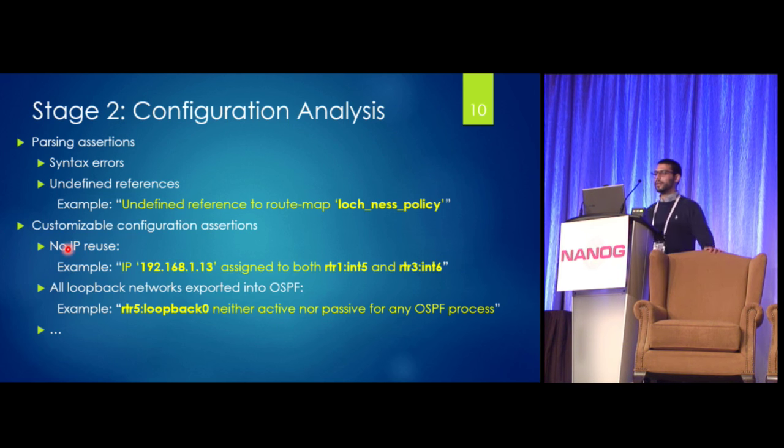So for instance, you might want to find out if IP addresses are reused across the routers in your network. So you would input that assertion, and an example output you might get is that this particular IP address you see here is assigned to these two interfaces on these two routers, and you may want to deal with that. Another common thing that operators wanted to see was whether loopback networks were exported into OSPF. You would need this, for instance, if you wanted to run MPLS or IBGP on top of your IGP network. And so some sample output right here would just show you that loopback zero on this particular router, it's not running active or passive OSPF, so the network's not going to make it into the OSPF RIB.